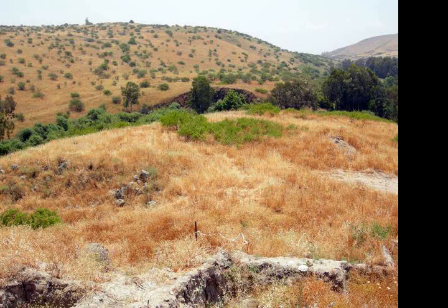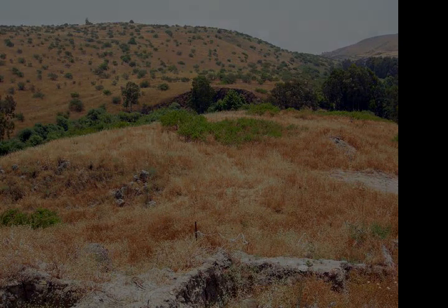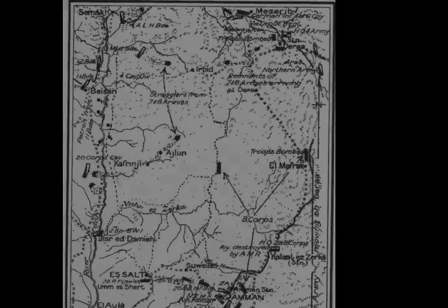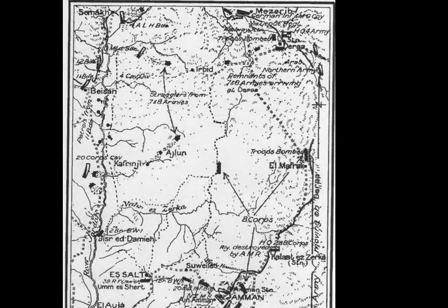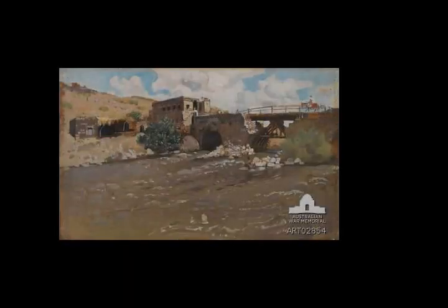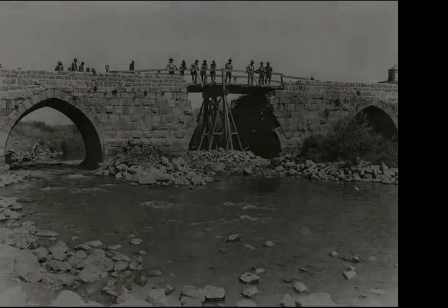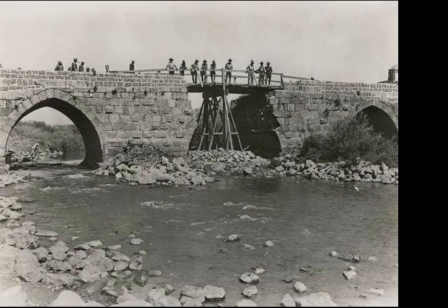B Squadron, 10th Light Horse Regiment, attacked and captured the rearguard. One troop had dismounted while the remaining troops, in single file due to the rough country, moved round the flank mounted. They attacked and captured the position, taking 12 German and 41 Ottoman prisoners, one field gun, one machine gun, one motor lorry, and an ammunition dump. Shortly before dawn the brigade arrived at Deer S. Serres, with B Squadron rejoining the regiment at 08:00 on the 28th of September.